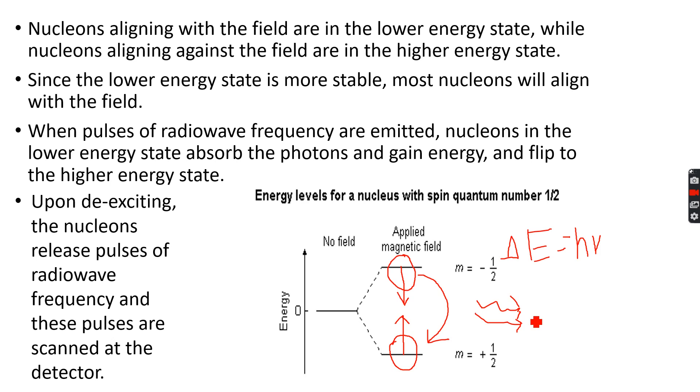These chemical shifts are plotted on the horizontal axis of the spectrum and are proportional to the frequency. The higher the frequency, the higher the chemical shift.